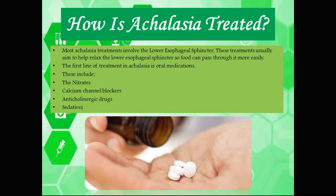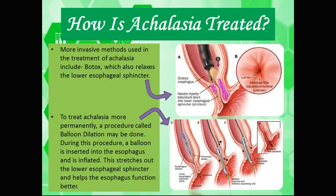Most achalasia treatments involve the lower esophageal sphincter and aim to help relax it so food can pass through more easily. The first line of treatment is oral medications, including nitrates, calcium channel blockers, anticholinergic drugs, and sedatives. More invasive methods include botox — the lower esophageal sphincter is injected with botulinum toxin, causing it to relax and open up this constricted path, allowing food to pass more freely from the esophagus into the stomach.